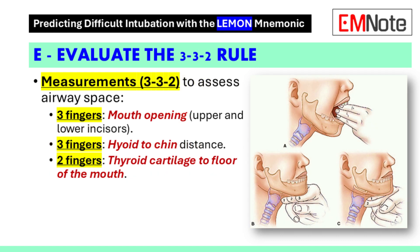Step 2: Evaluate the 3-3-2 rule. The second component focuses on the 3-3-2 rule. Ideally, the patient should have a mouth opening wide enough to accommodate three fingers placed side by side. Additionally, there should be a distance of three fingers from the tip of the chin to the hyoid bone, and two fingers from the hyoid bone to the thyroid cartilage. This measurement helps determine if there is sufficient space for successful intubation.